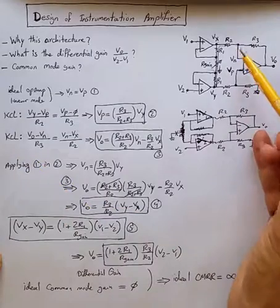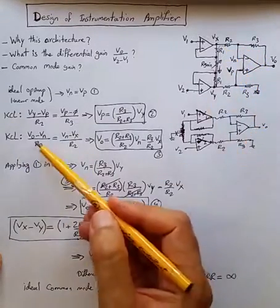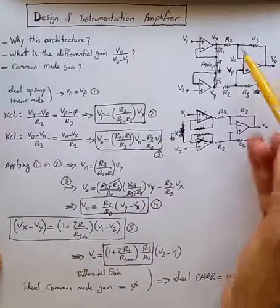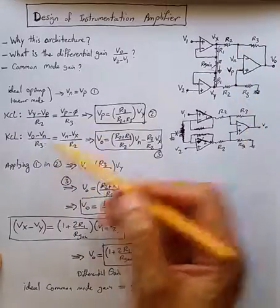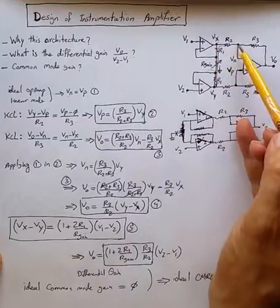Another KCL, for the same reasoning that current flowing from output to R3 goes through R2 as well. So we can write down a KCL, Vout minus Vn divided by R3, that's this current, equal to Vn minus Vx divided by R2, that's this current.